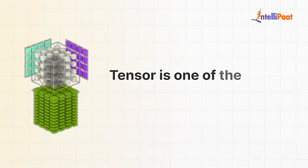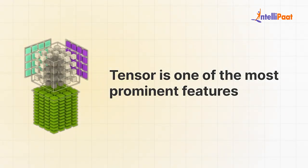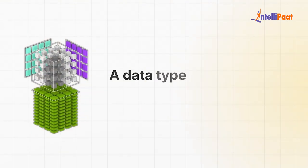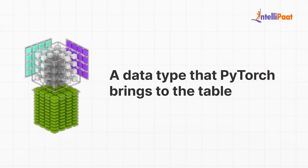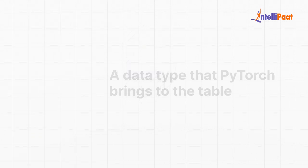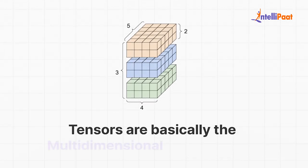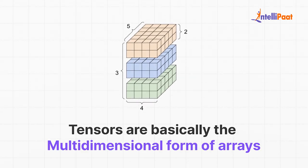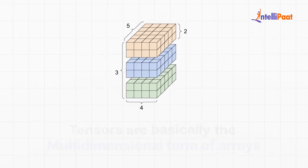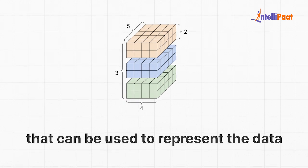Tensors are one of the most prominent features, or data types, that PyTorch brings to the table. Tensors are basically the multi-dimensional form of arrays that can be used to represent data. We've discussed tensors in detail in one of our other videos — you can go ahead and watch it to build a deeper understanding.